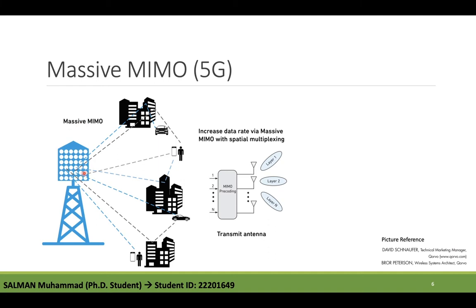In spatial multiplexing, each channel carries independent information. If the environment is rich in scattering, many independent sub-carriers are created in the same allocated bandwidth, achieving multiplexing gain with no additional cost in bandwidth or power. With Massive MIMO, multiple antennas focus signals at the transmitter and receiver to a small region of space, bringing huge improvements in throughput and energy efficiency.